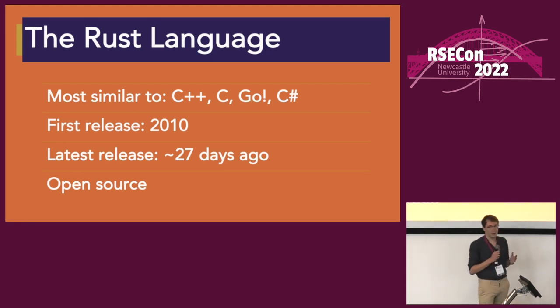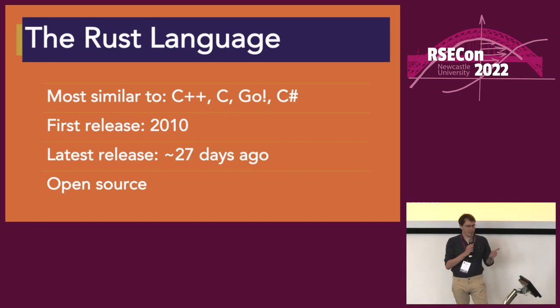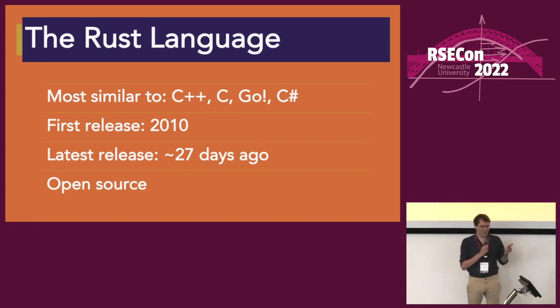Rust was originally developed by Mozilla Research and originally sponsored by Mozilla, Google, Meta, and Huawei, among others.